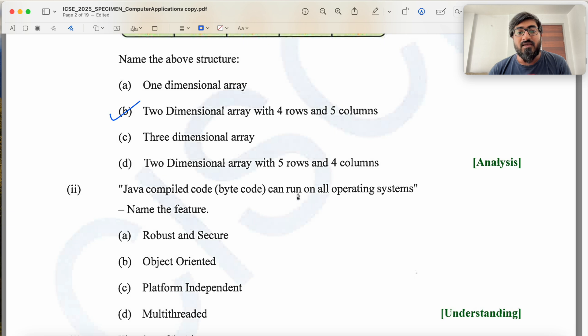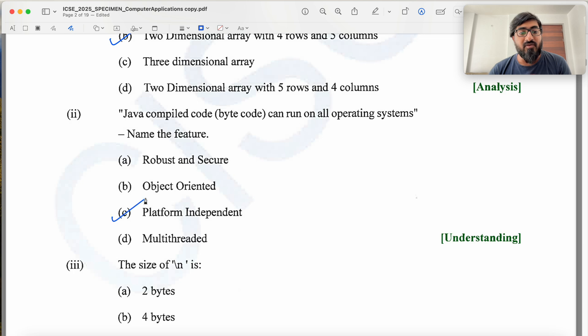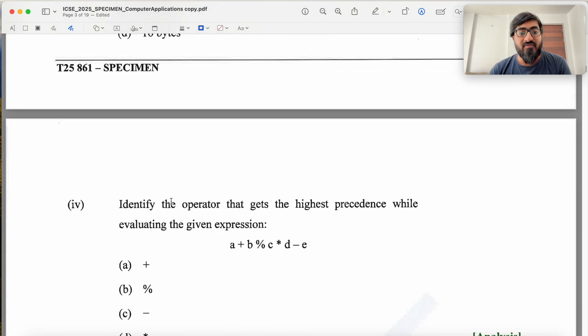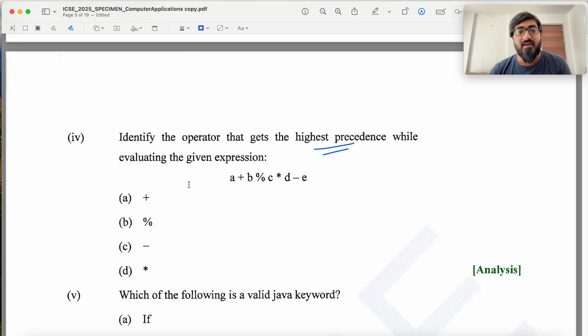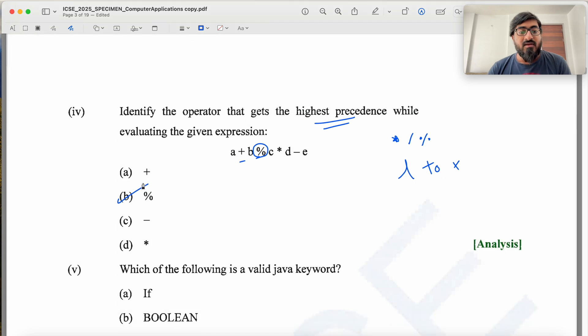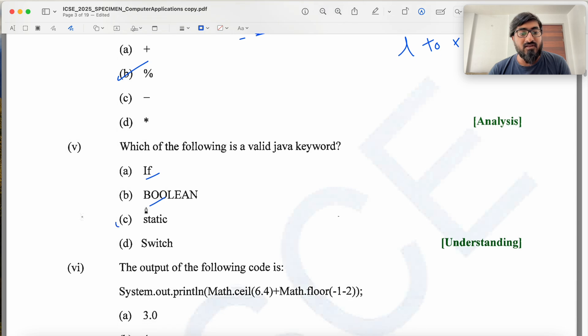Java compiled code can run all operating systems is true and the feature is platform independent. The size of backslash n - this is a char constant. Char constants are two bytes. Then we have the operator with highest precedence while evaluating the given expression. In terms of precedence, multiplication, divide and percent have the same precedence. So you have percent.